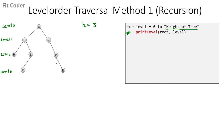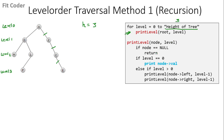The height of the tree is the maximum number of edges from the root node to a leaf node. The maximum number of edges are 1, 2, and 3, so the height of this tree is 3. In the print level function, we check if the node passed is null then we return; if the level passed is 0 we print the value; otherwise we call the function again for left and right.